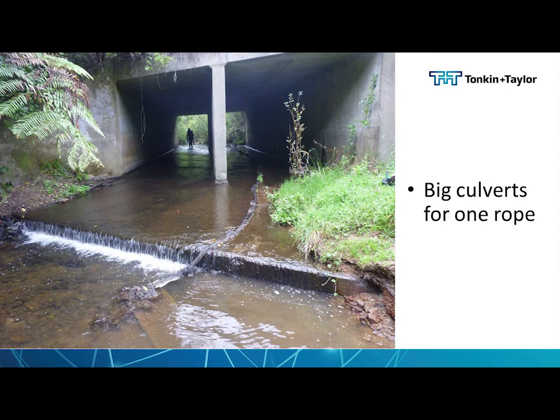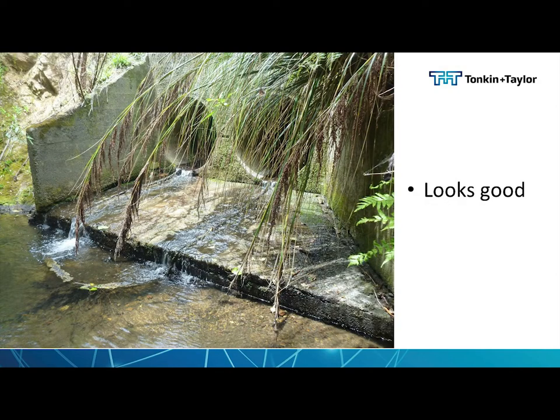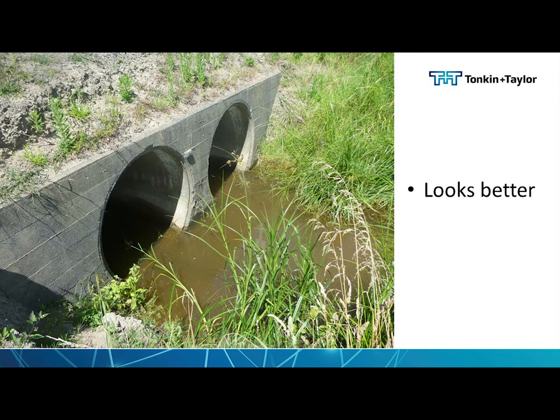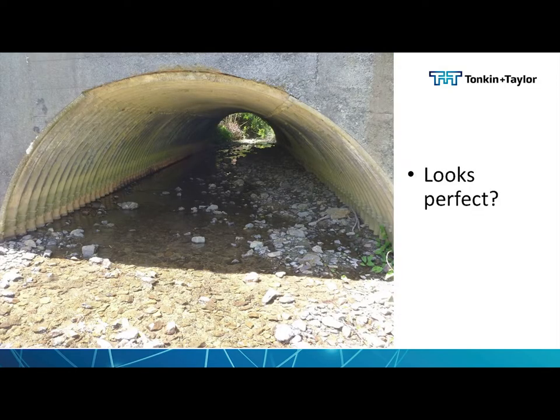We saw twin box culverts with a single rope in them. We saw twin circles with a couple of ropes, which looked a bit better. We saw twins that actually had the downstream end embedded or a tailwater back through the pipe, which was even better. Along the way, we saw a very large arch culvert that had full substrate retention without mussel spat ropes or anything — that may be the stream simulation approach we've been talking about.